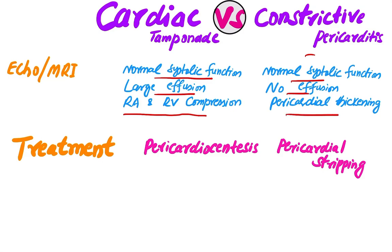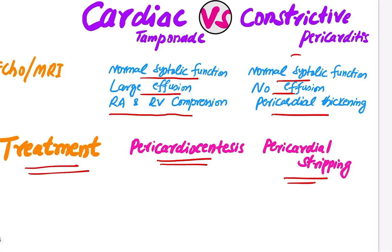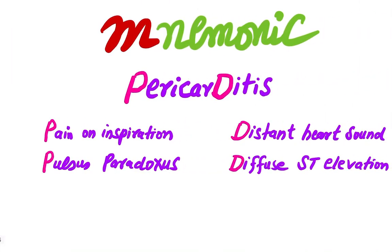Regarding treatment: in cardiac tamponade, pericardiocentesis is performed. In constrictive pericarditis, pericardial stripping is the treatment of choice. There is a mnemonic by which you can easily remember the different presentations.